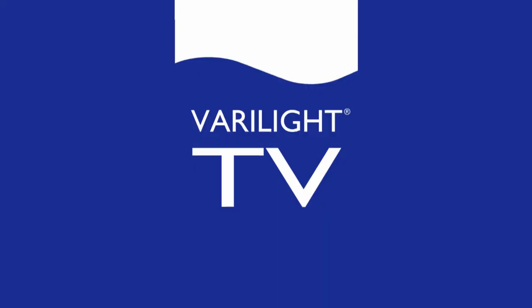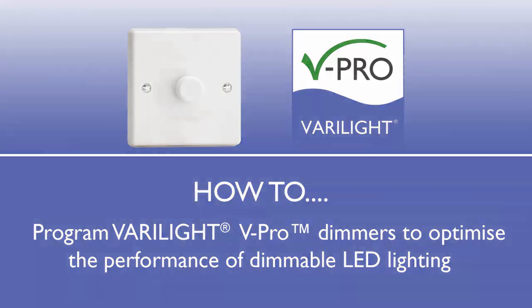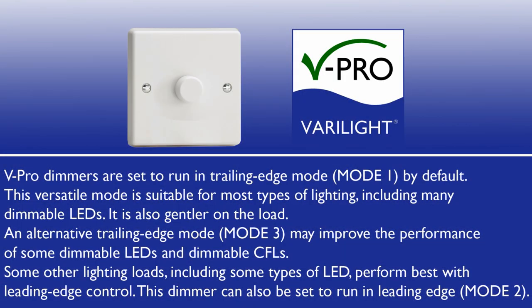Welcome to Verilite TV. In this video we will show you how to program Verilite vPro dimmers to optimize the performance of dimmable LED lighting. vPro dimmers are set to run in trailing edge mode by default. This versatile mode is suitable for most types of lighting including many dimmable LEDs, and is also gentler on the load.